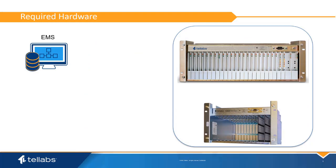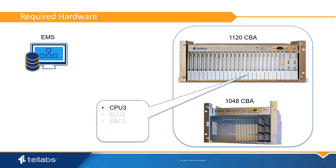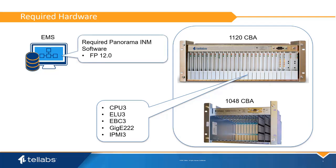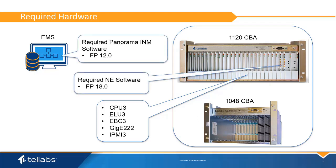The IP POTS card works in existing TELABS 1000 DLC equipment. Supported shelves include the TELABS 1120 and 1048 shelves. Cards required in the CBA are the CPU3, the ELU3 and EBC3 for expansion shelves, the GigE222 card for the Ethernet uplink, and the IPMI3 for management access. The required ESU software for Panorama I&M is Feature Package 12 and the NE software is Feature Package 18.